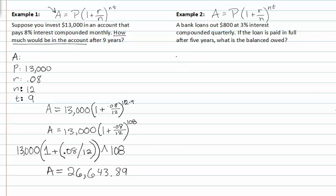In example two, we'll do the same process again. A, P, R, N, and T.